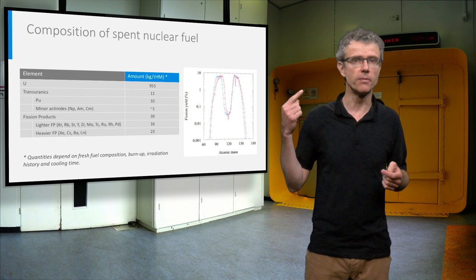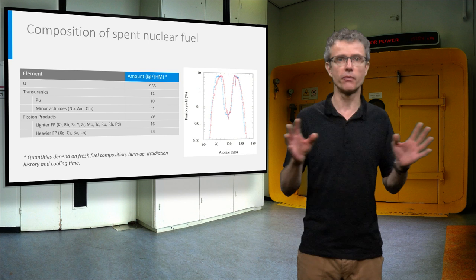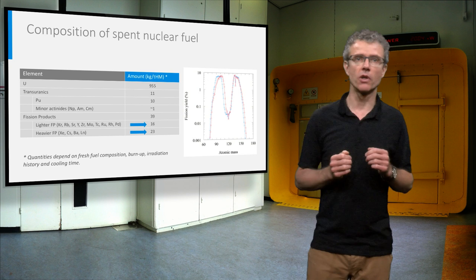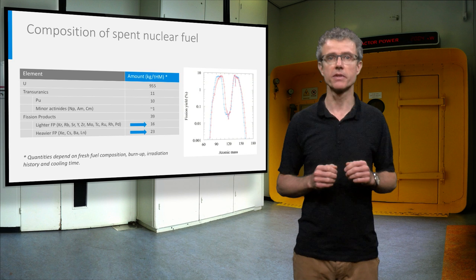You might remember the curve of the fission yields from a lecture in the first week. Well, the quantities of different fission products reflect this figure perfectly, with 16 kg lighter fission products and 23 kg heavier fission products. Many of these fission products are radioactive and so decaying faster or slower depending on the respective half-lives.